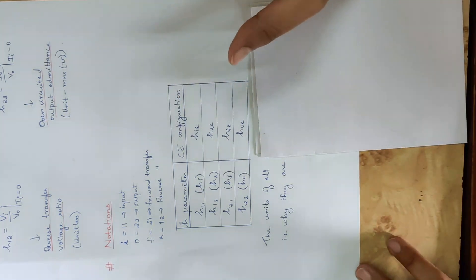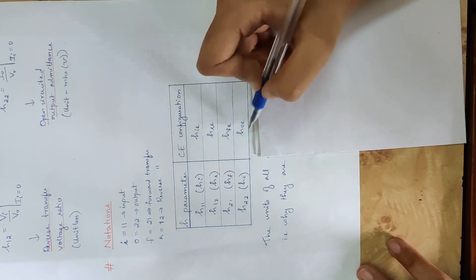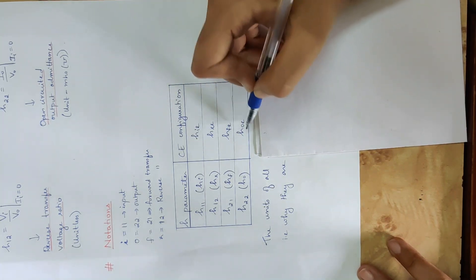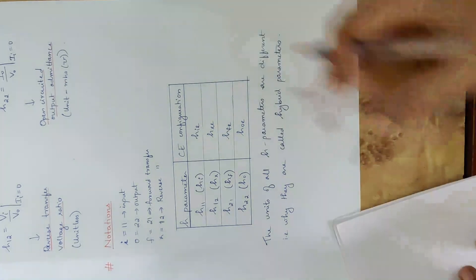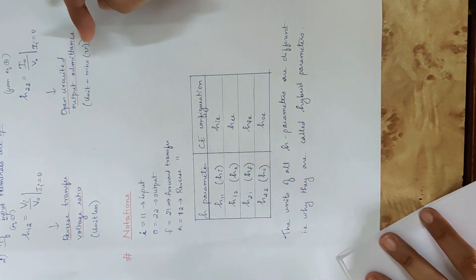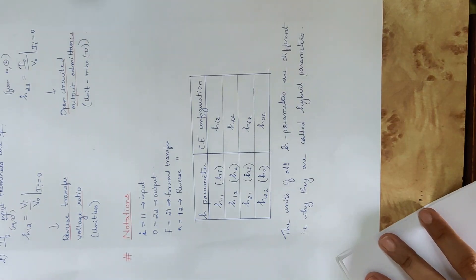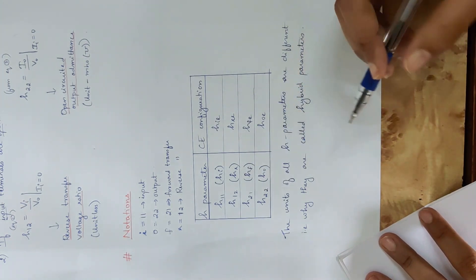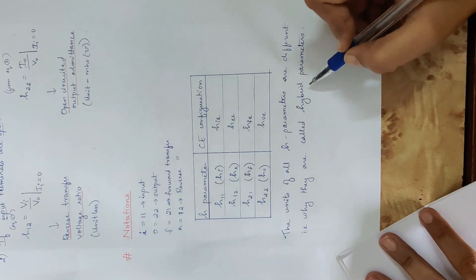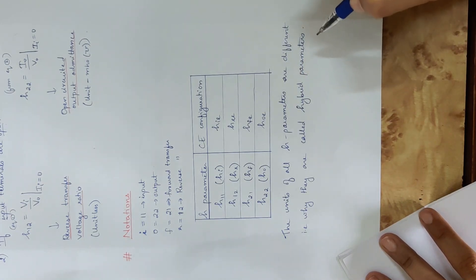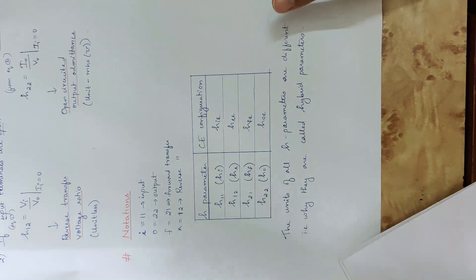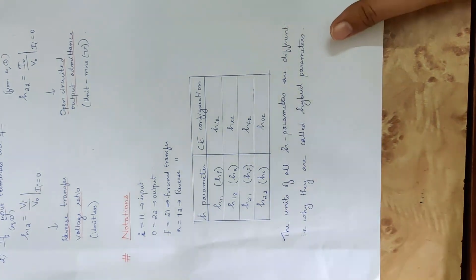Common emitter configuration is one configuration. We have the circuit with hie, hre, hoe. Now we have seen this unit. This is the hybrid parameters unit. This is different — this is hybrid parameters.